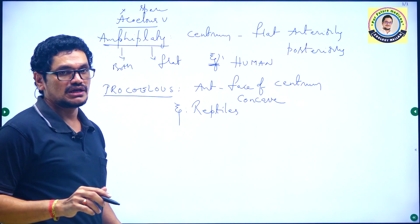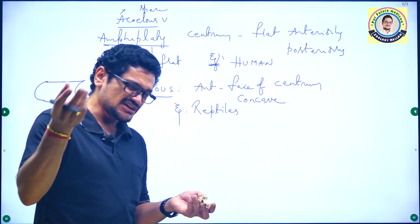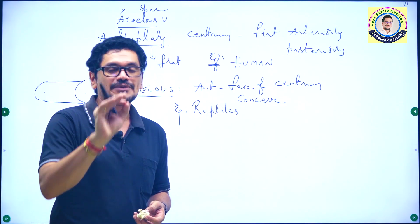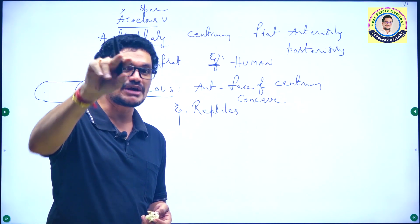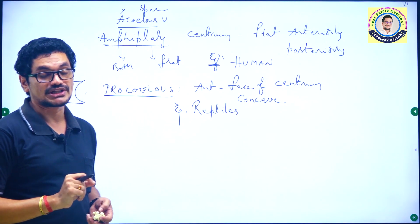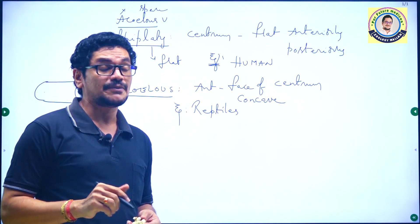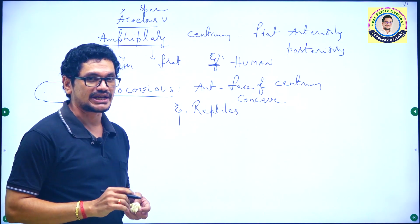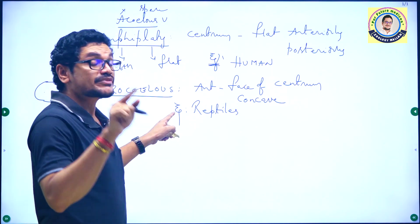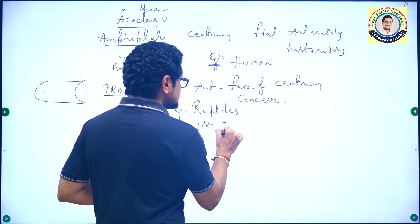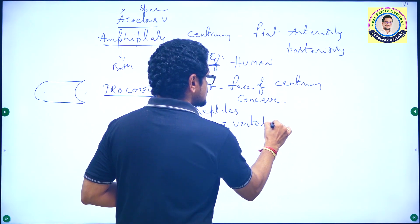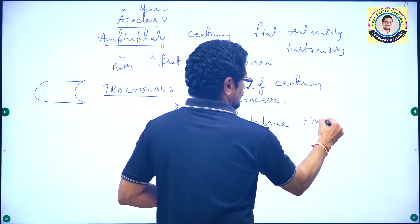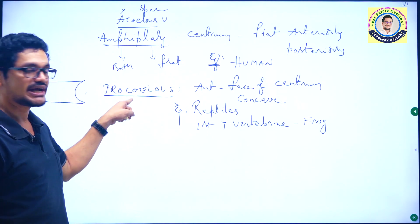The number of vertebrae in frog is 10. There is a special quality about frog vertebrae — not all come under one category. In case of frogs, the first seven vertebrae come under procoelous vertebrae. This is a very important previous question.